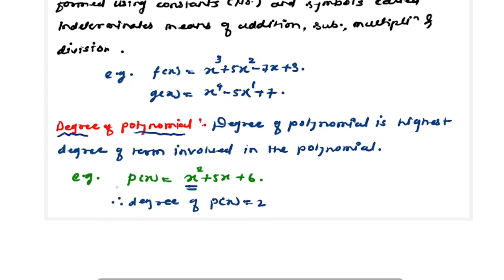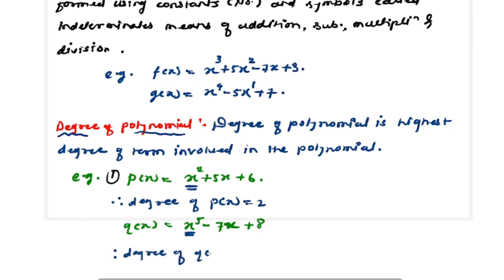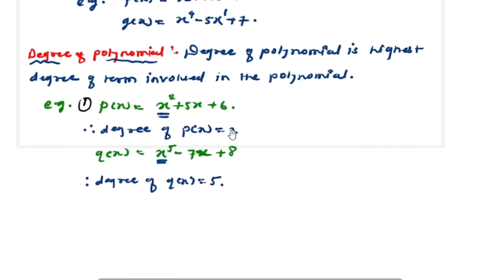For the second example, consider q(x) = x⁵ − 7x + 8. The highest degree term involved in this polynomial is x⁵, so the degree of q(x) is 5. It should now be clear what the degree of a polynomial means.